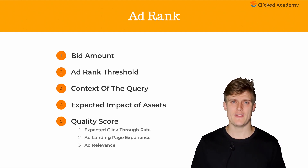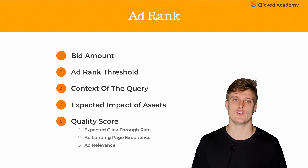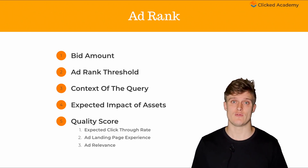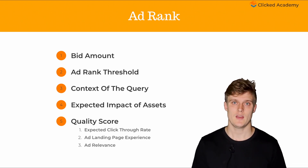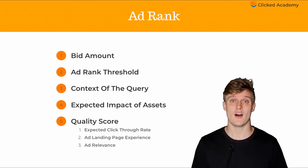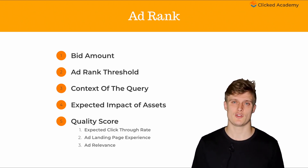Now the fifth factor is your quality score, which is a score given by Google that assesses the quality of your ad at the time of auction. The quality score is ranked from 1 to 10, with 1 being the lowest and 10 being the highest. The better the score, the higher your ad rank, and the lower you'll need to bid to win an auction.